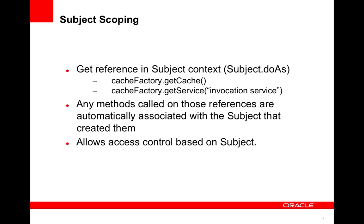Subject scoping — which is configurable and optional — means that every time someone gets a cache or gets a service on the client side with a security context, in other words a subject doAs, that cache reference is permanently associated with that subject. That means any operations for that cache or service will be done on behalf of that subject. The reason you would want to do this is so that you can do authorization in the proxy. You have to be careful in your code — you can't just hand off these cache references to any thread or anybody using it, because it's now associated with that particular identity. You want to make sure that you use it only for that subject.